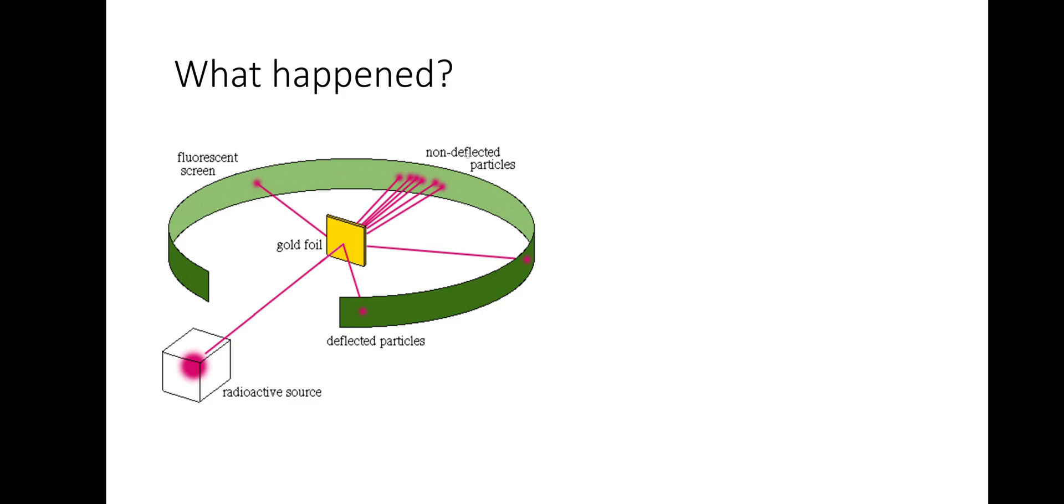They were, at the top here, the non-deflected particles onto the fluorescent screen. However, we got some particles that were deflecting at quite large angles in this region and this region, which wouldn't have been possible under the plum-pudding model. And some of the alpha particles were actually deflected at incredibly large angles and deflected back towards the radioactive source.